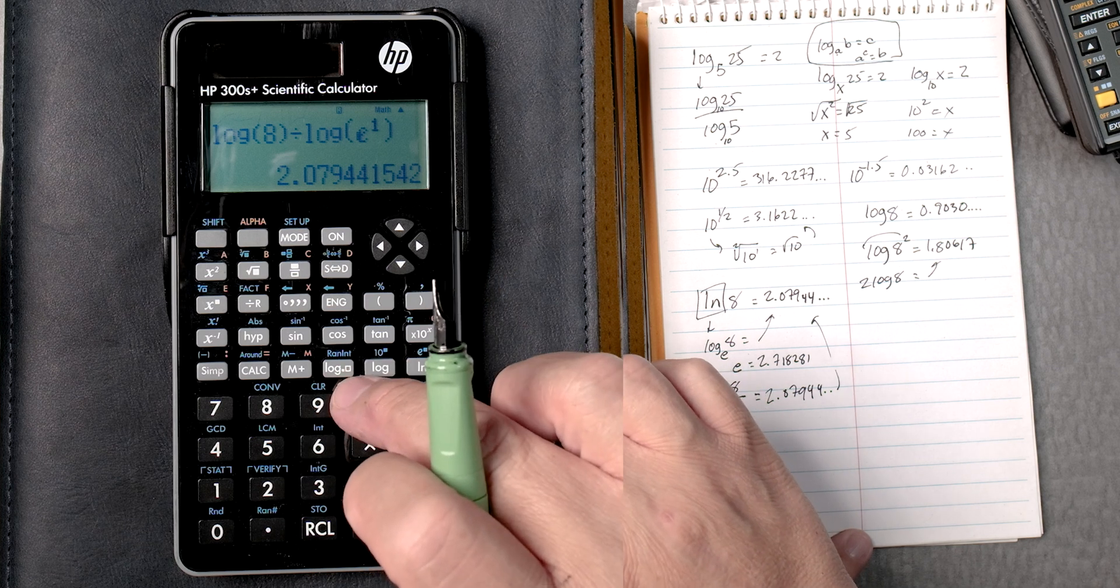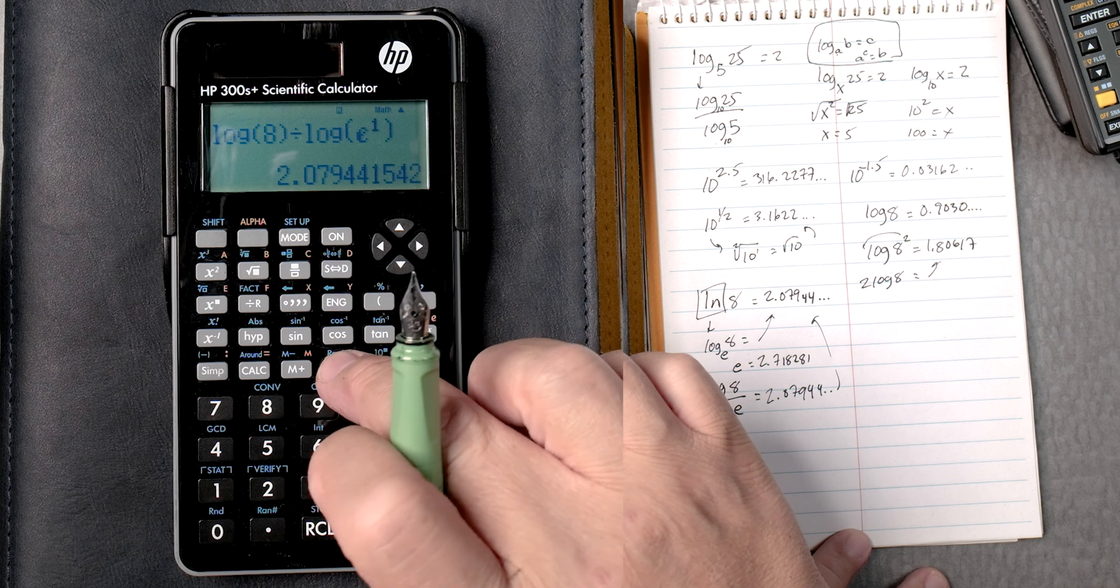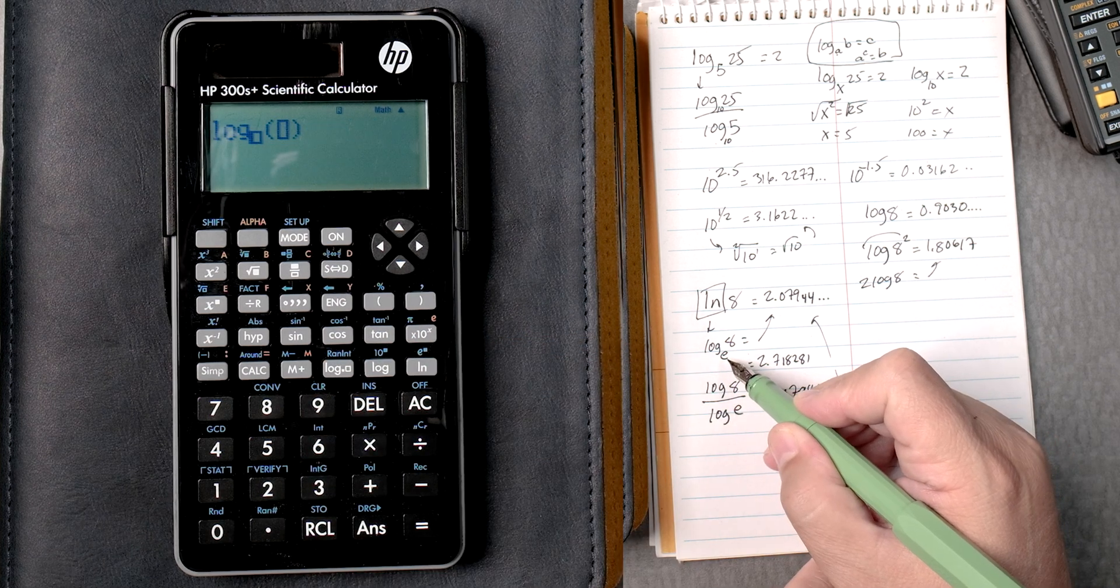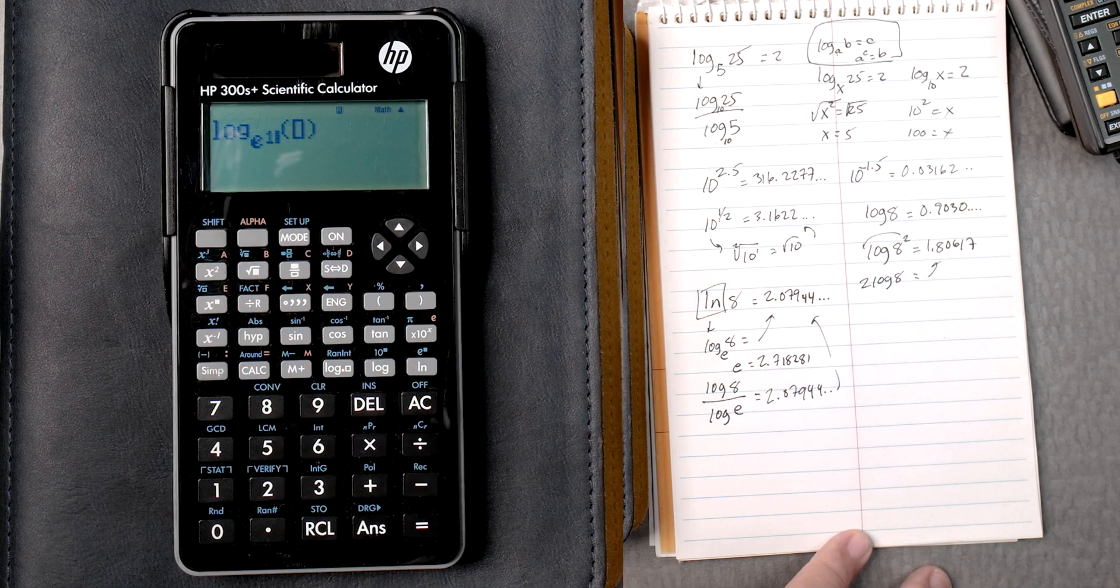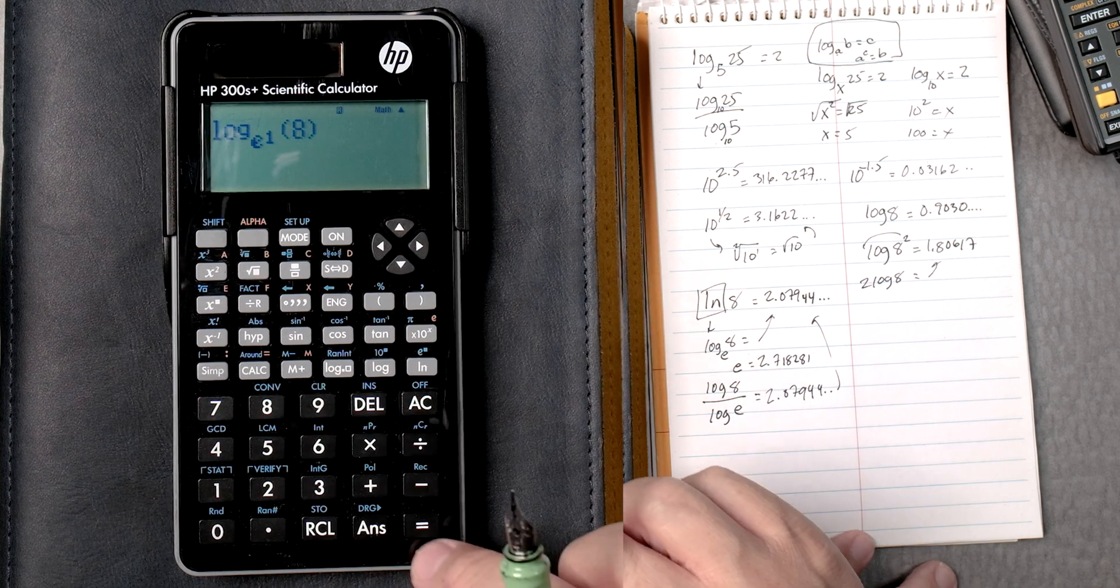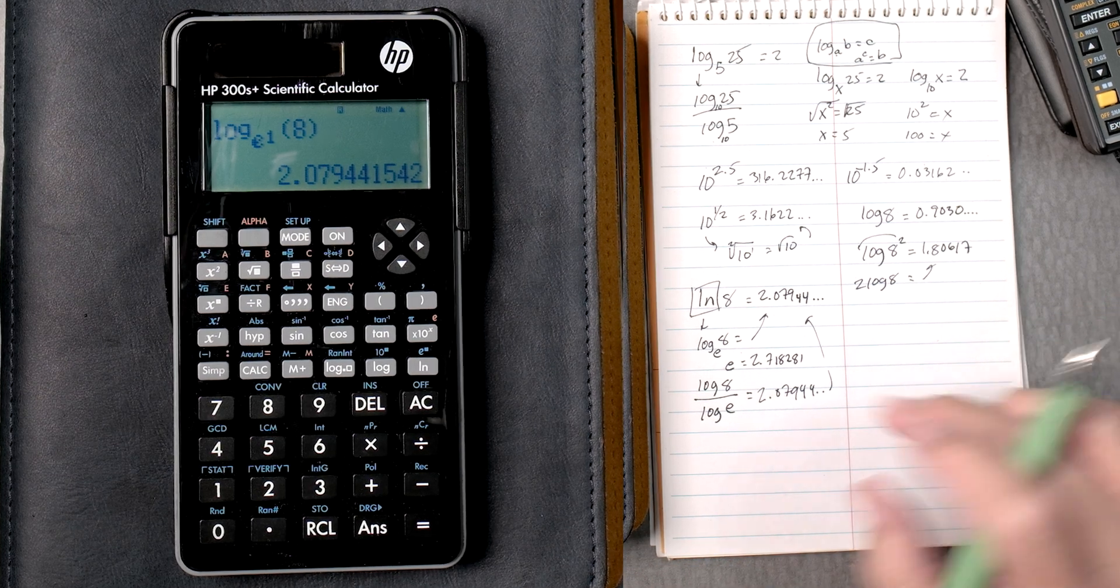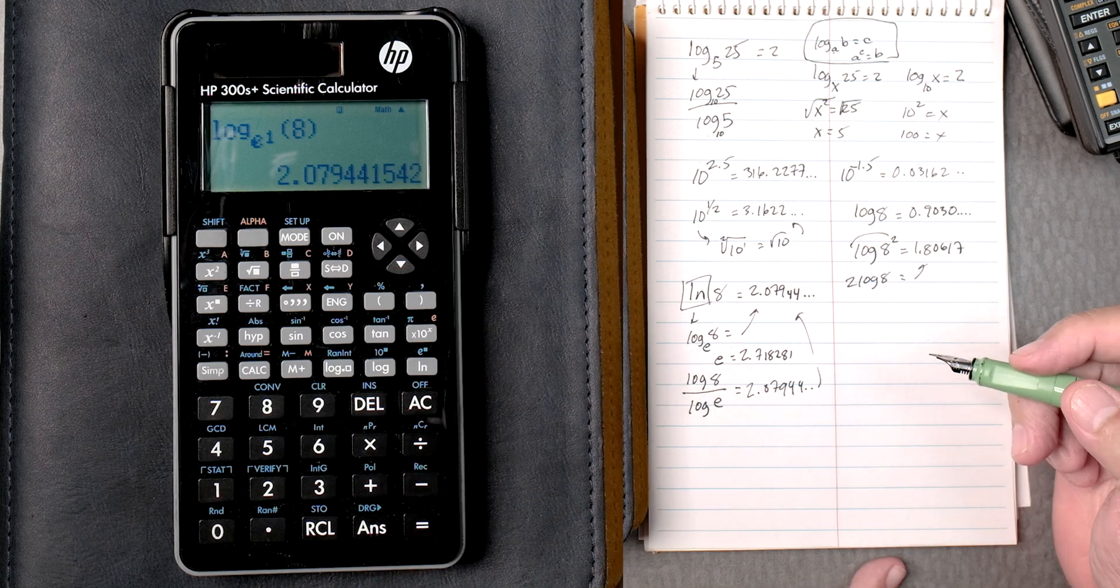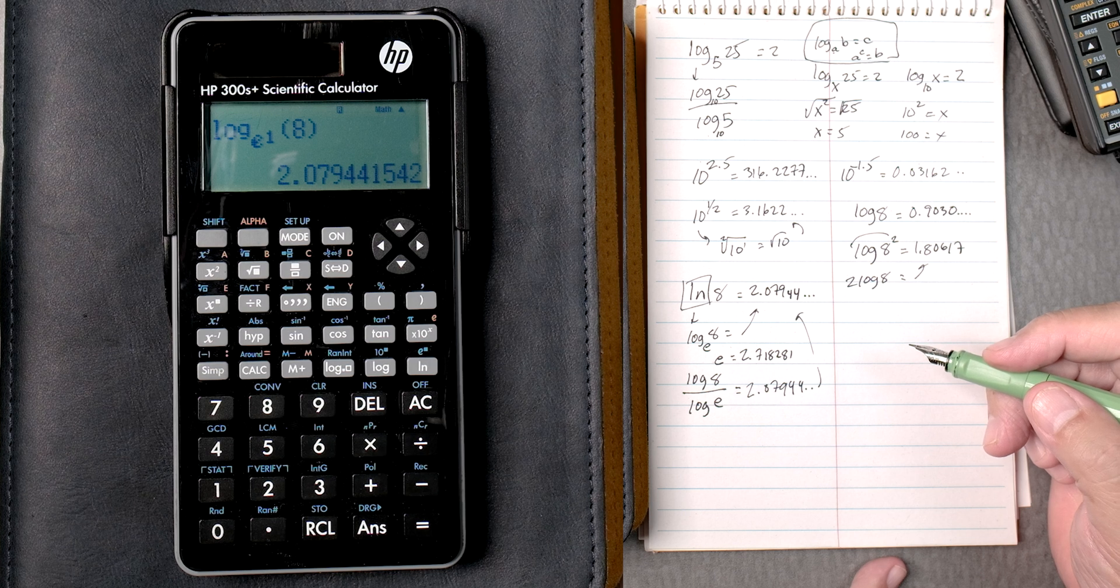But we have a log any base number. So let's do that. Let's press this button. And we have a log on the bottom, e. So we go shift, natural log, put a 1 there, we scroll over, and we type in 8 equals 2.07944. That's very nice. It's a key that's built in to the calculator. This is a very nice calculator, very cool.